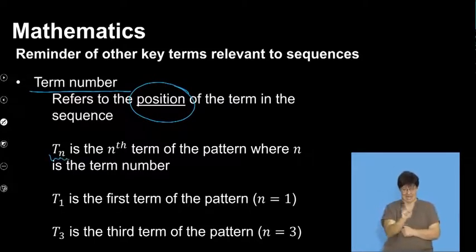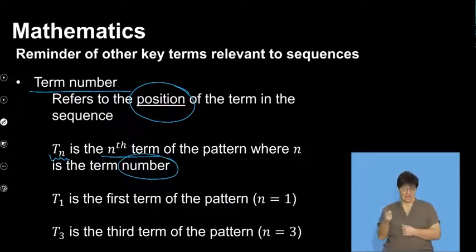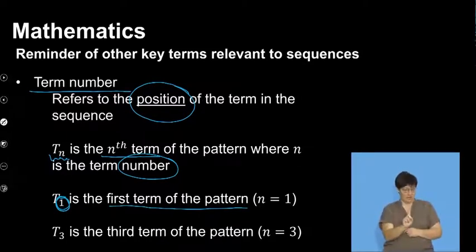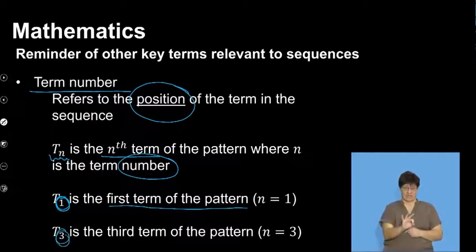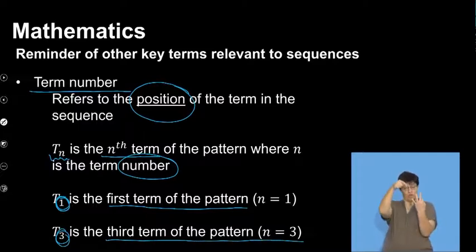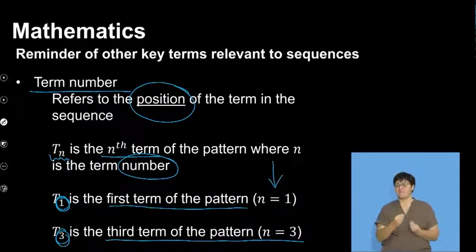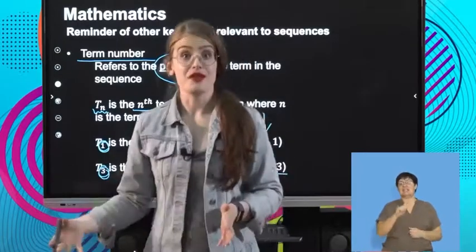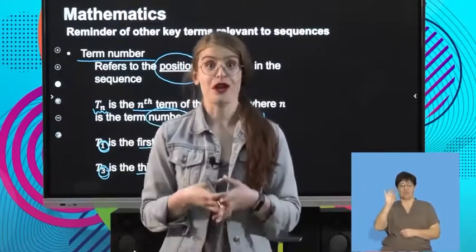T_n is the nth term of the pattern, where n is the term number. So, if I say T1, and we can see that 1 is in the nth position, that means it's the first term of the pattern. T1 is the first term of the pattern. And if I say T3, that means it is the third term of the pattern. So T1 has n equal to 1, and T3 has n equal to 3. Hopefully everyone's with me so far. So if I said T63, that would be the 63rd term of the pattern.